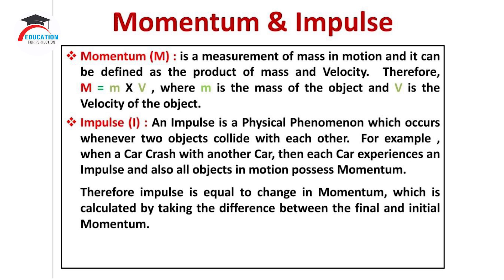Now let us see about impulse. An impulse is a physical phenomenon which occurs whenever two objects collide with each other. For example, when a car crashes with another car, each car experiences an impulse. Also, all objects in motion possess momentum. Therefore, impulse is equal to the change in momentum, which is calculated by taking the difference between the final and the initial momentum.